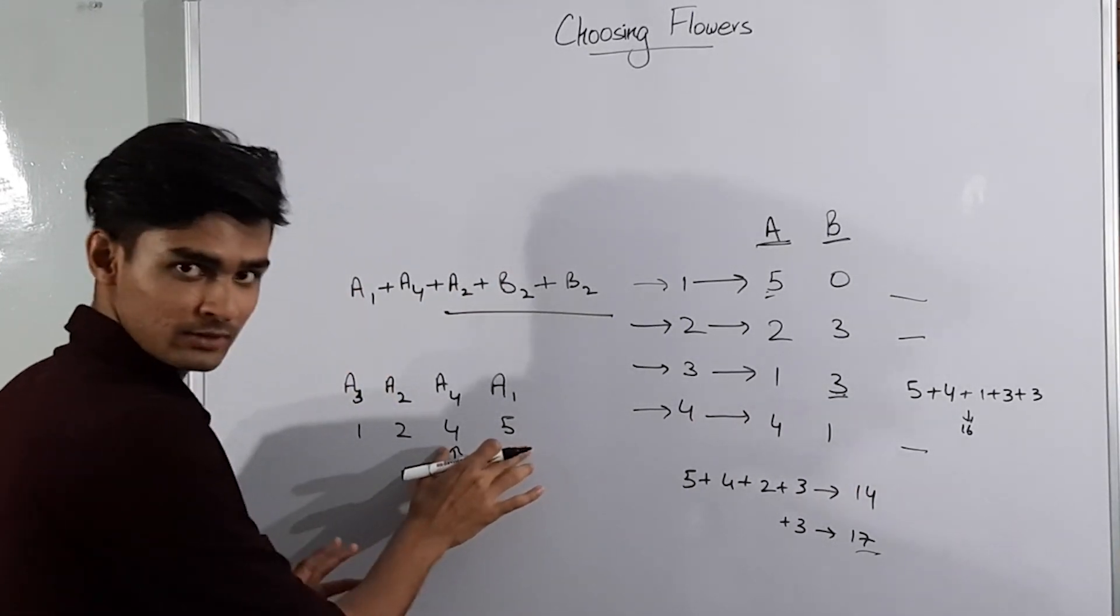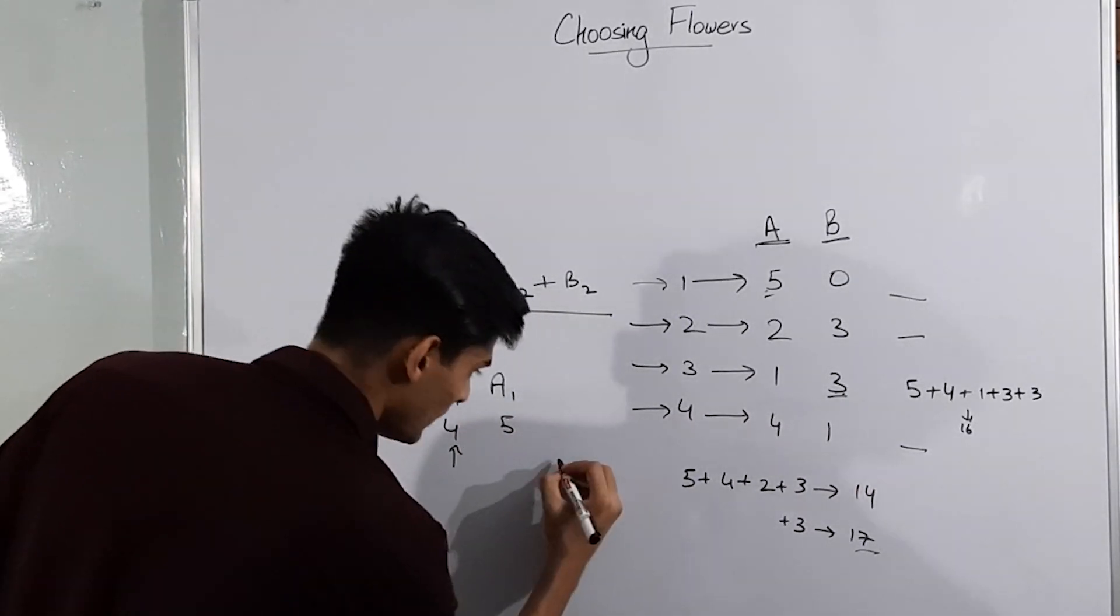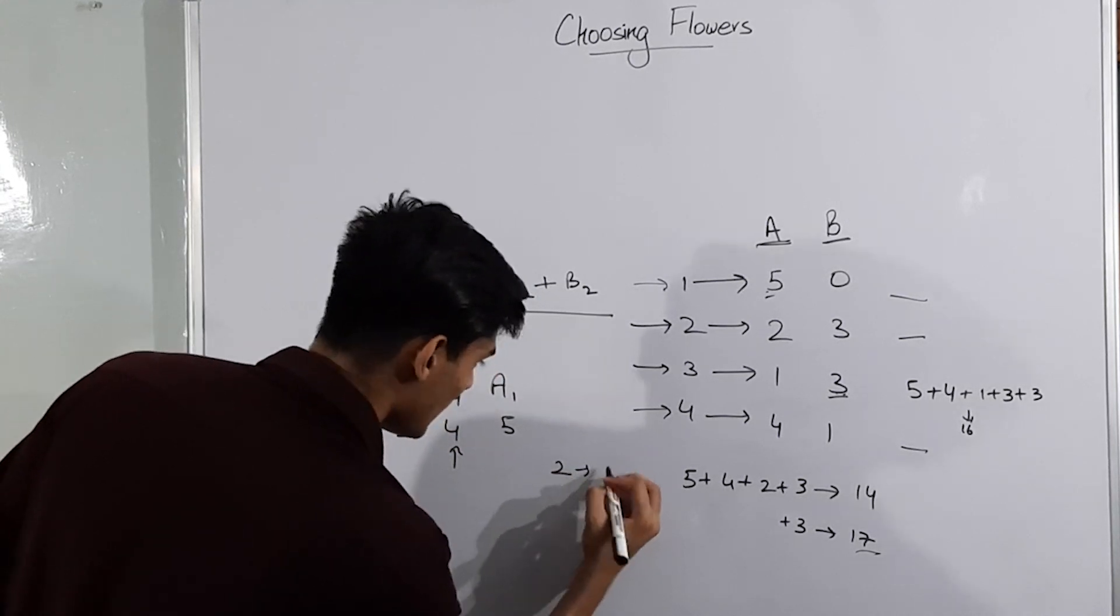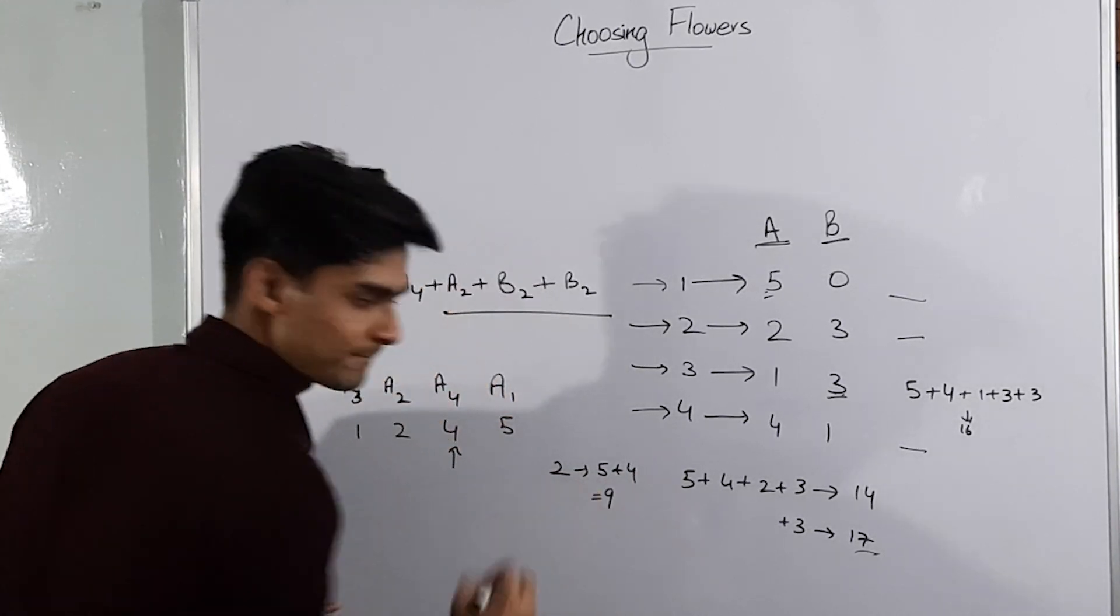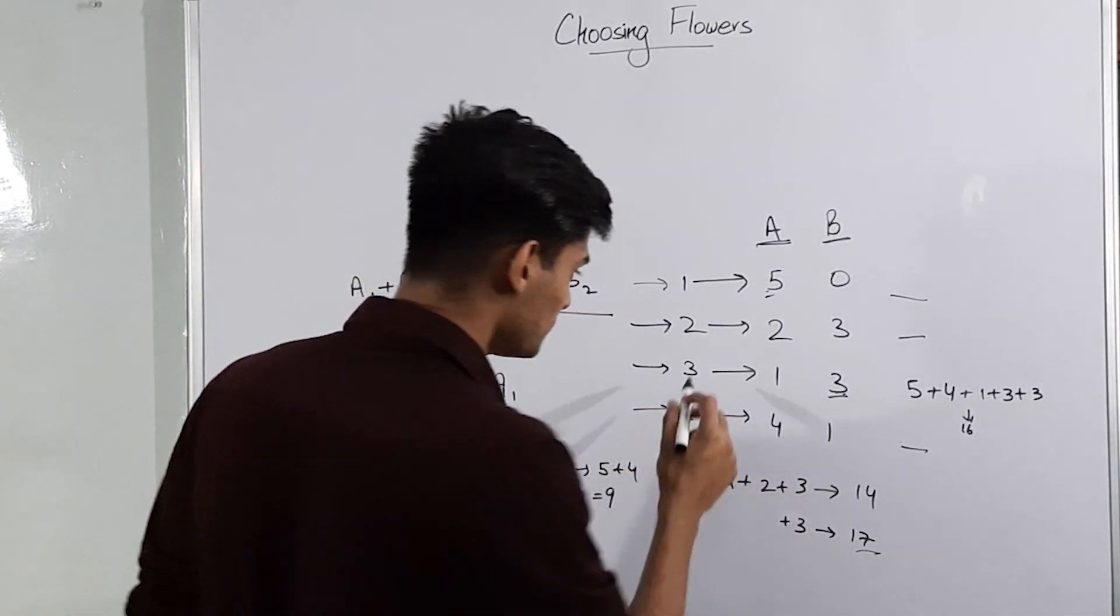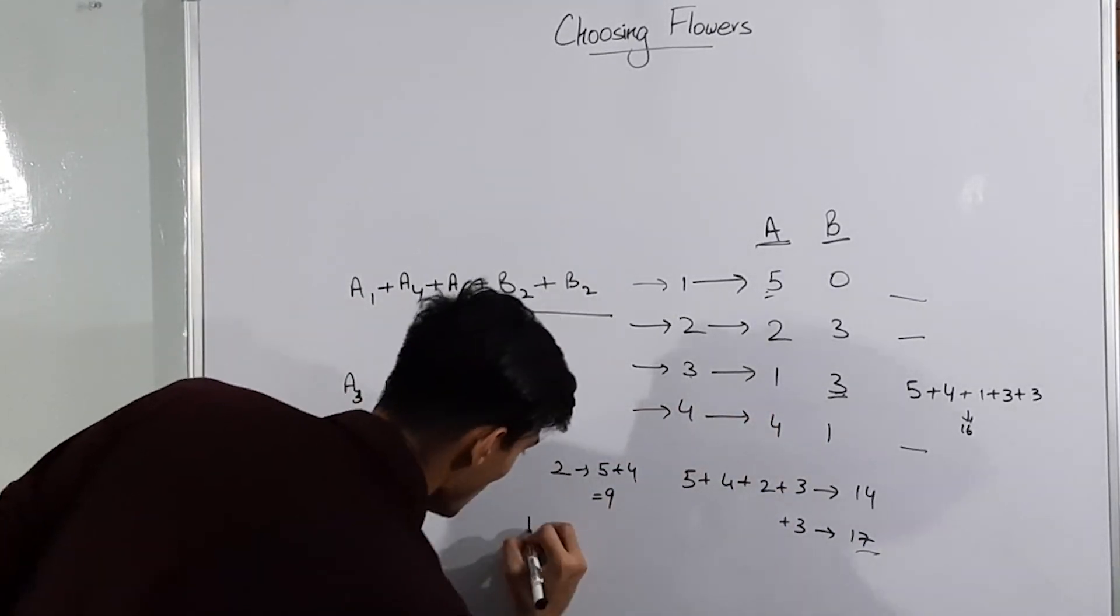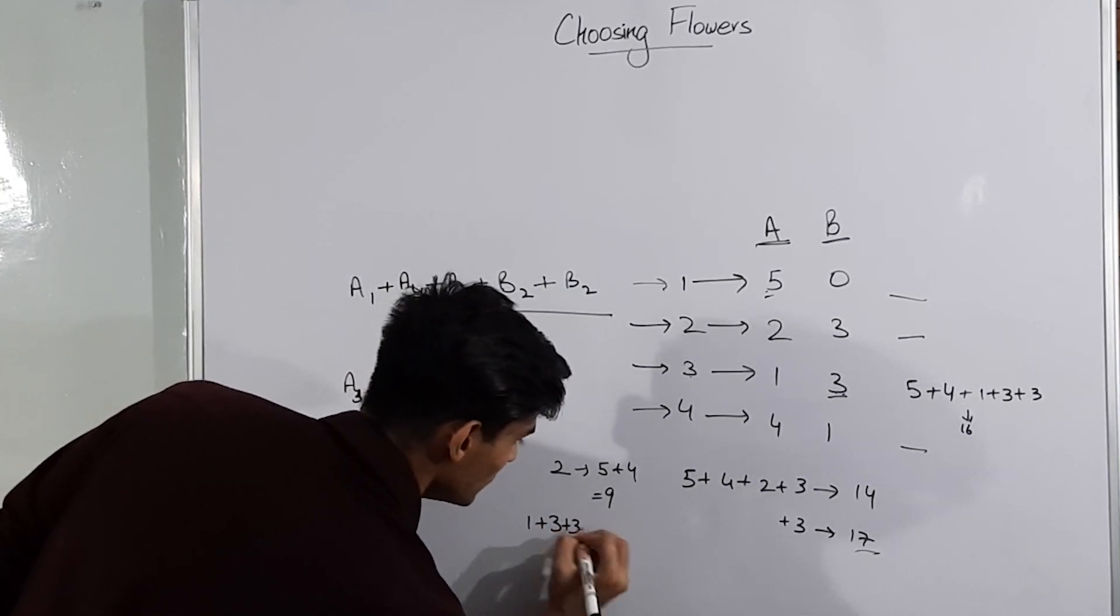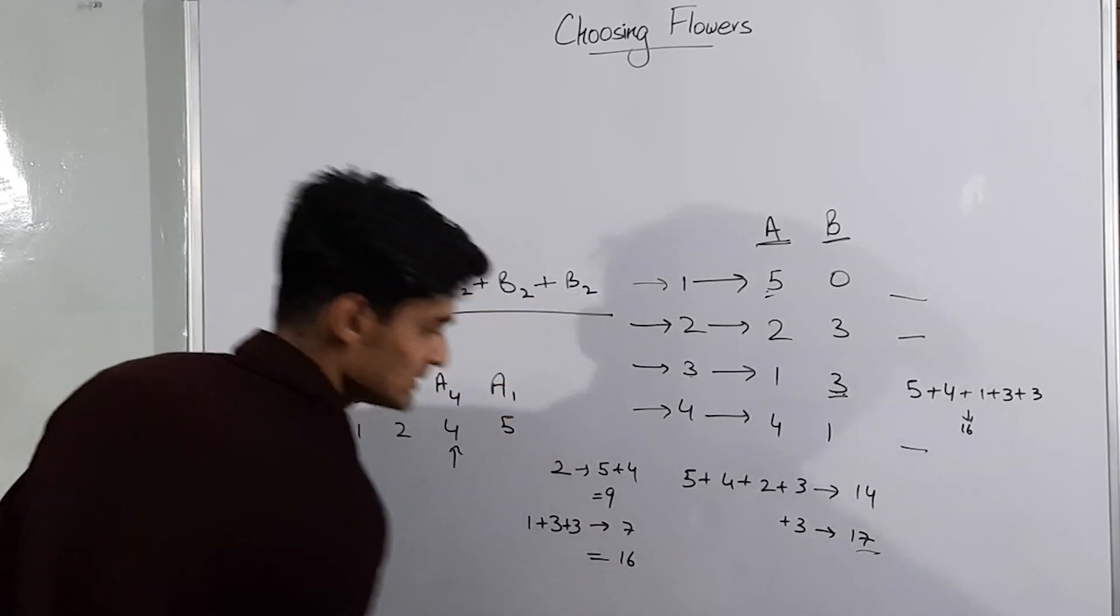Now since there are two elements after this, we will say that we have taken up two flowers and we have the happiness value of 5 plus 4, that is 9. And now since we know that we will have to take the rest 3 from the type 3 only, therefore we will have 1 plus 3 plus 3, which is 7 and this total makes up a 16.